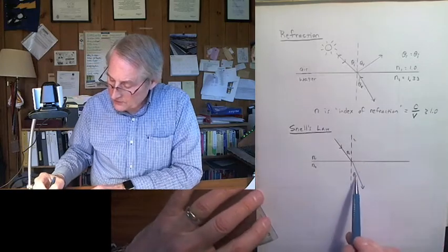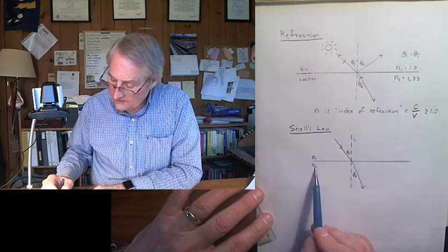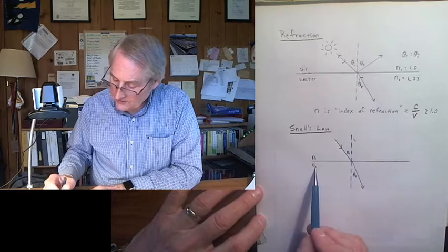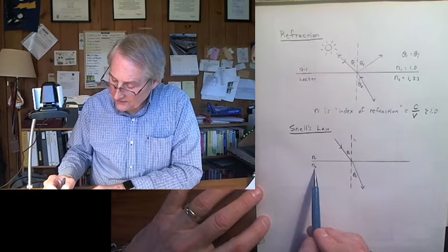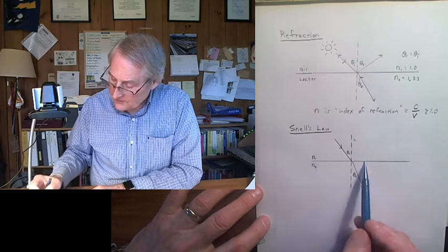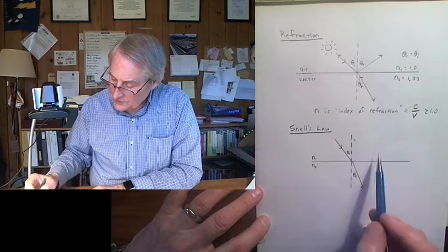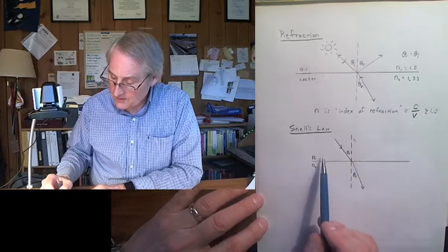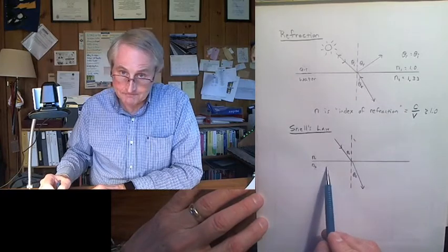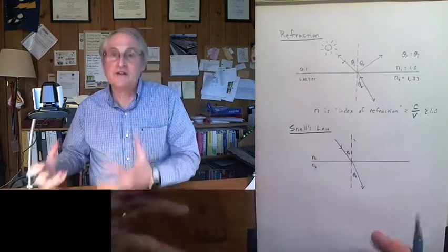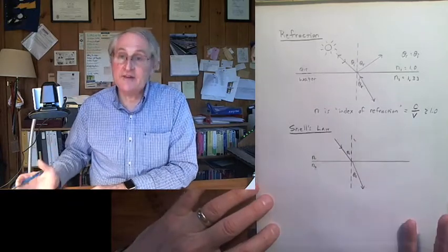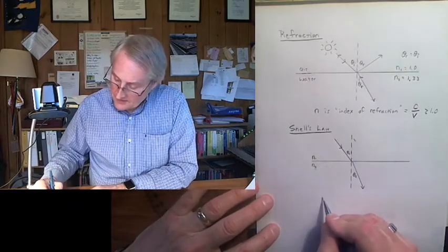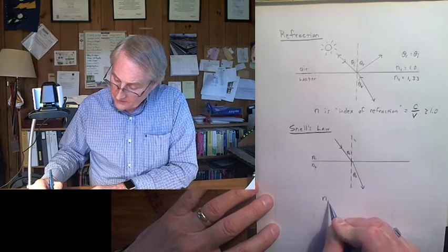And so now this is very general. The angle here on this side is, theta 2 corresponds to the index of this material. This line is the interface between two materials. It could be air, water, but in fact for our experiment this will be air and this will be glass. So here's the quantitative result. We're going to test this. And the result is called Snell's law.